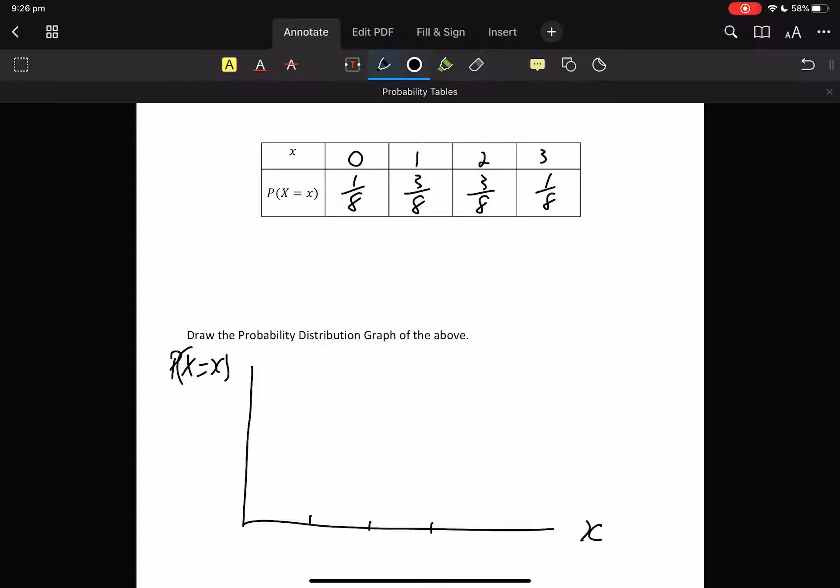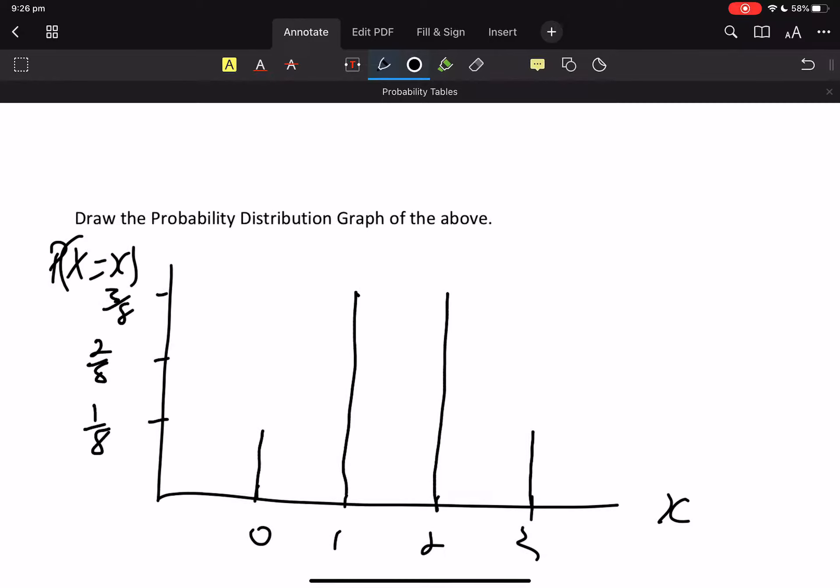And I've got to go up to 1 eighths, 2 eighths, 3 eighths, and that's it. It is not a histogram. It is not really a column graph.